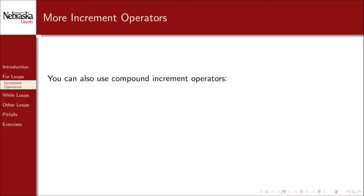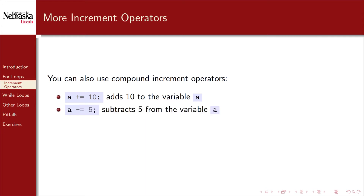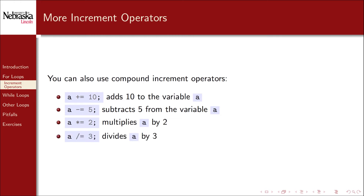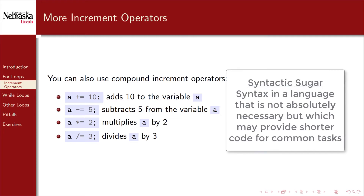You can also use other compound assignment operators. For example, a += 10 adds 10 to the variable a, allowing you to add values other than just 1. Likewise, using -= allows you to subtract values — for example, subtracting 5 from the variable a. You can also use the multiplication and division operators to modify variable values. Each of these operators is syntactic sugar — they provide shorthand ways of doing common operations, giving a language more flexibility.